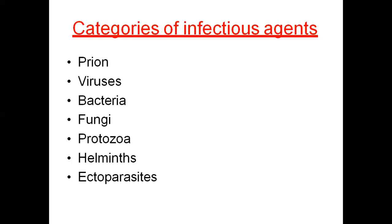These microorganisms colonize in our body and spread infection. They are called infectious agents. The categories of infectious agents are: prions, virus, bacteria, fungi, protozoa, helminths, and ectoparasites.